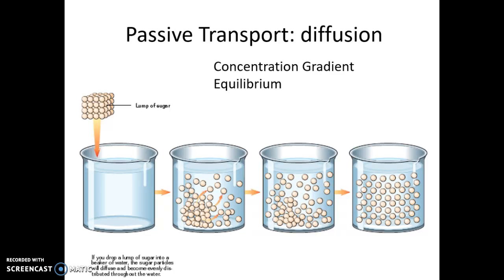The most common forms of passive transport are diffusion and osmosis. This slide shows one example of diffusion. If you take a lump of sugar and dump it into a glass of water, over time the sugar is going to diffuse throughout the water.